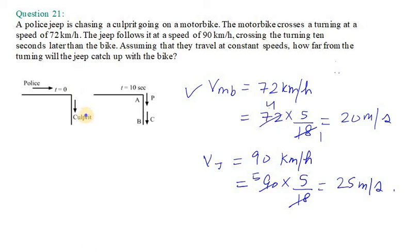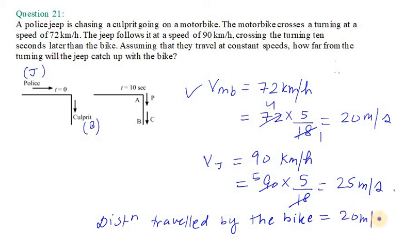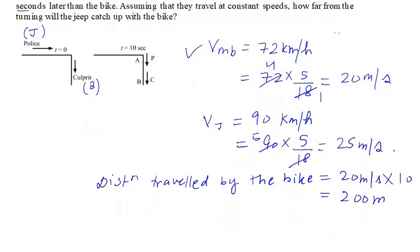The police on the jeep are chasing the culprit on the bike. There is a difference between the speed of the motorbike and the jeep. First, we need to find the distance traveled by the bike. The jeep crosses the turning 10 seconds later than the bike, so distance traveled by the bike is 20 meters per second multiplied by 10 seconds, which gives 200 meters.